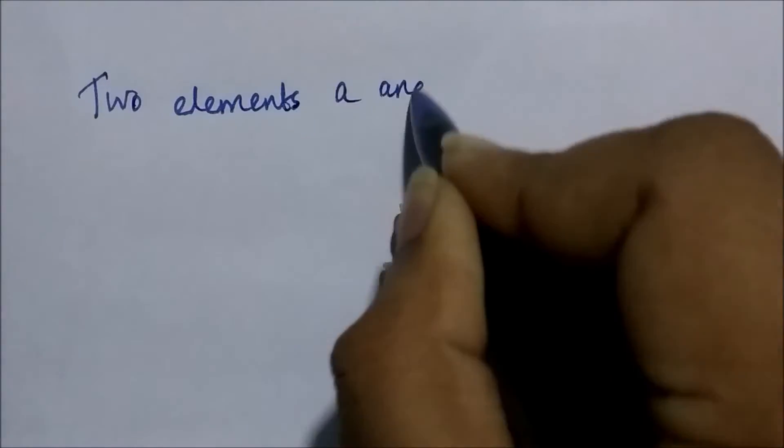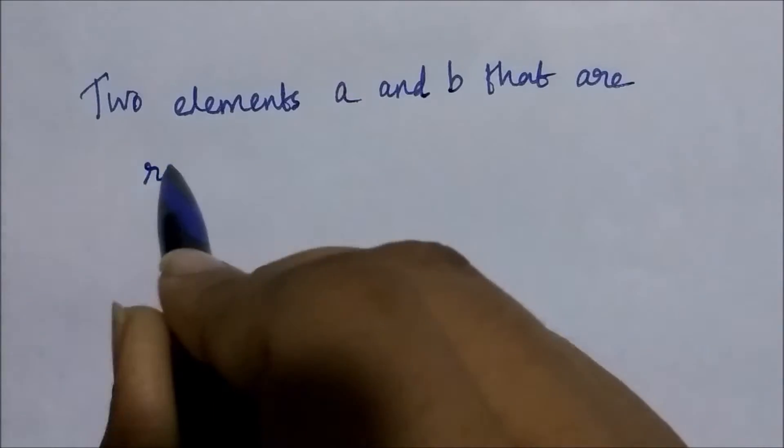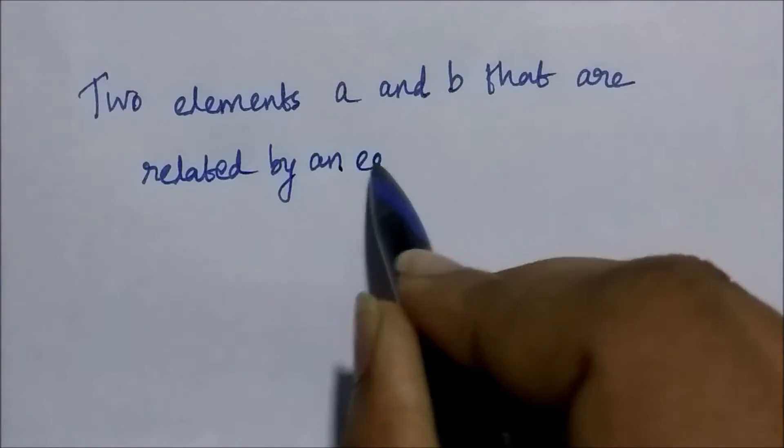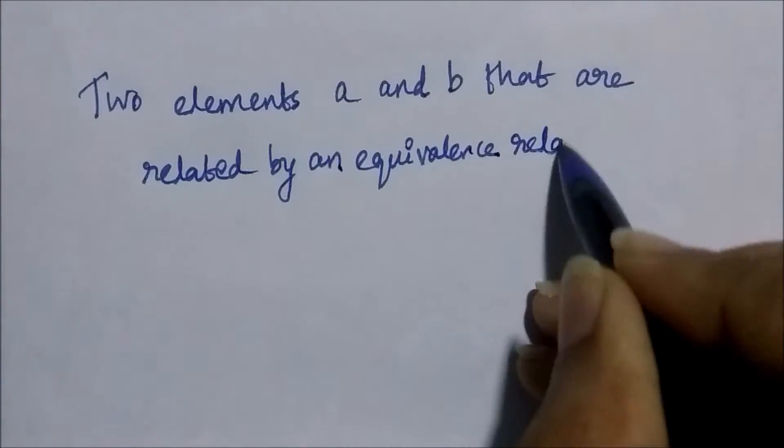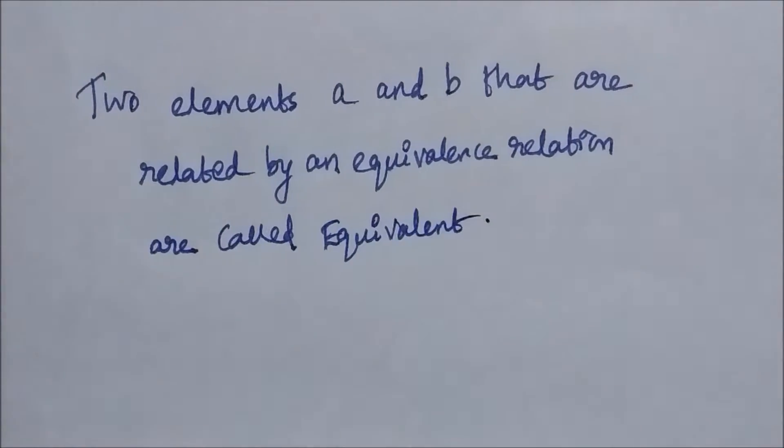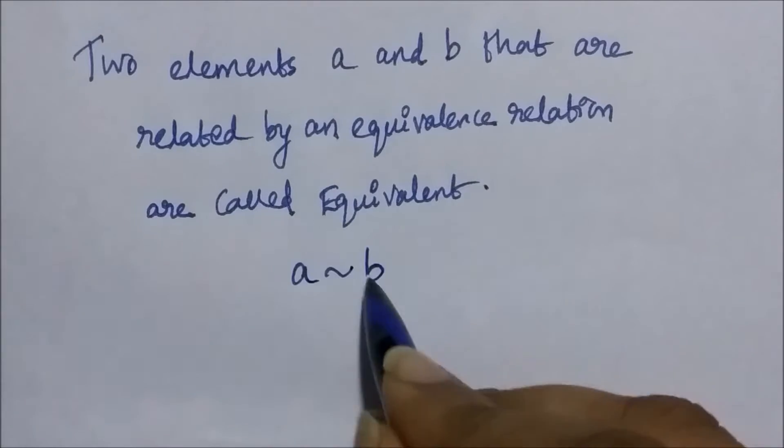Two elements A and B that are related by an equivalence relation are called equivalent. We denote A equivalent B this way.